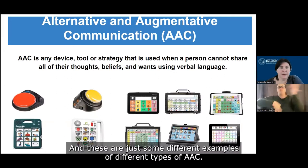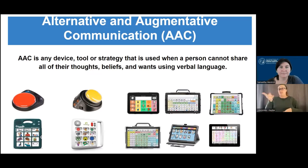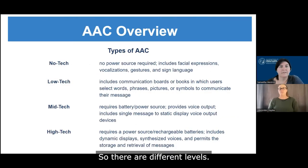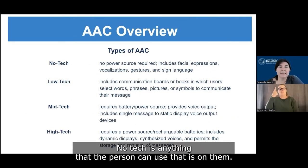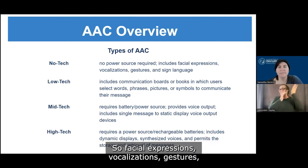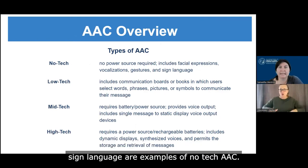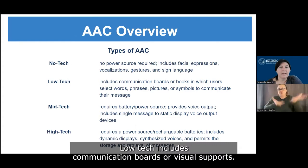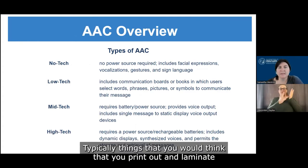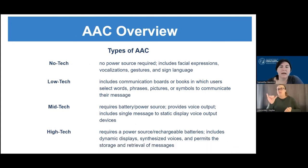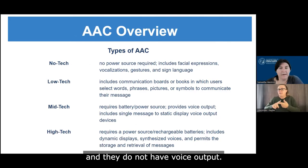These are just some different examples of different types of AAC. So there are different levels. No tech is anything that the person can use that is on them — so facial expressions, vocalizations, gestures, and sign language are examples of no tech AAC. Low tech includes communication boards or visual supports, typically things that you would print out and laminate, and they do not have voice output.